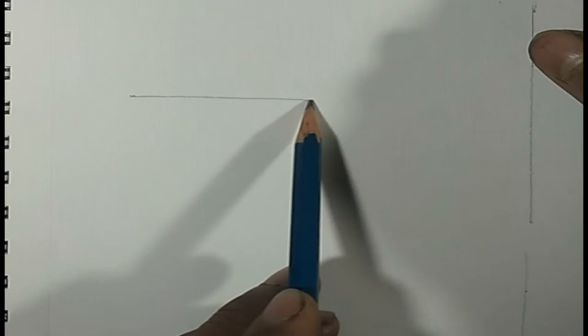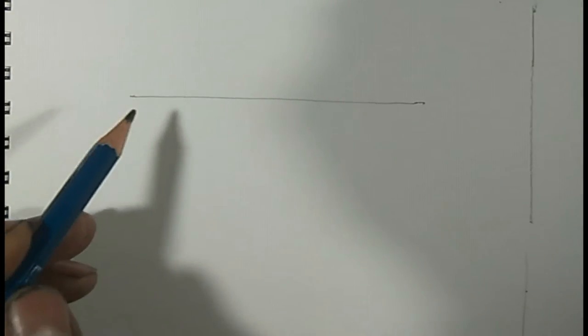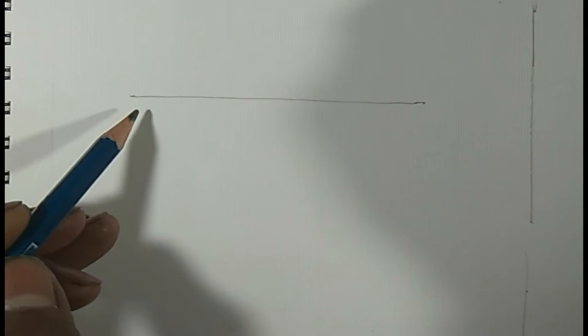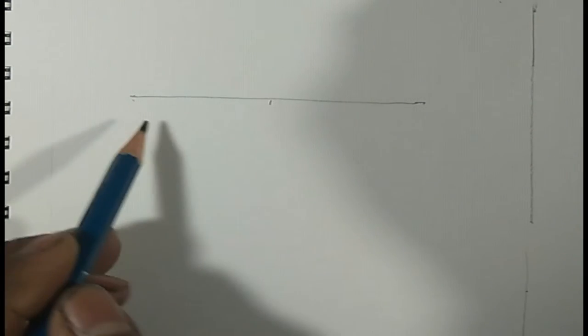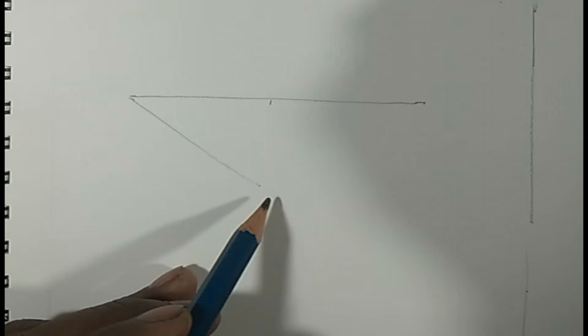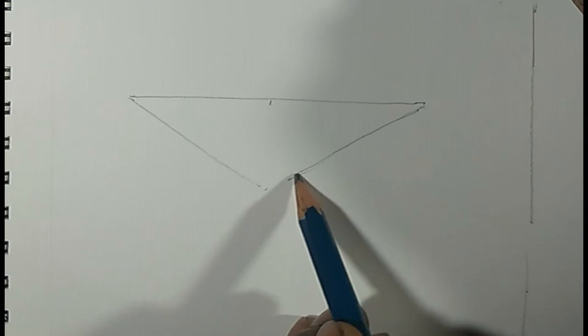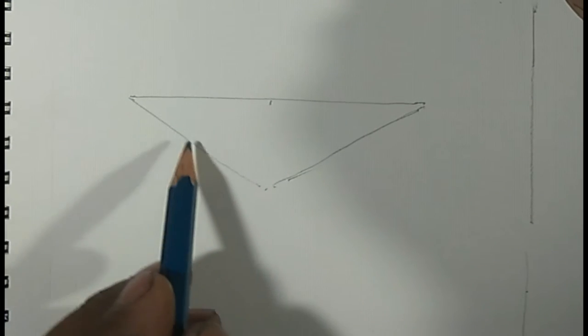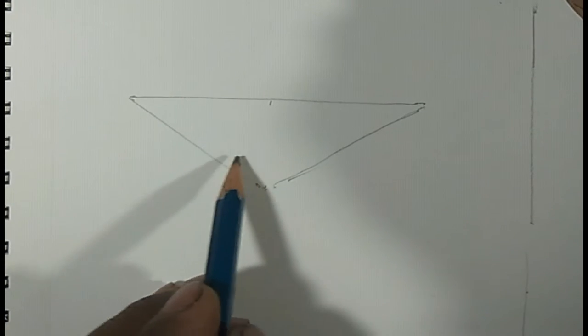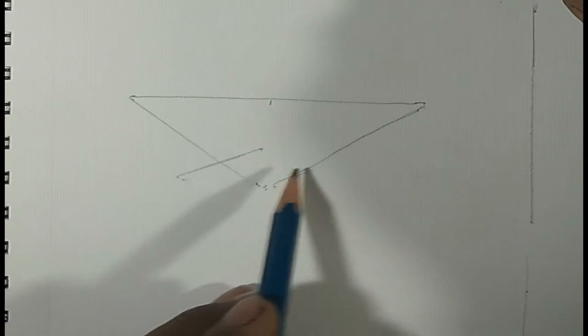First we draw a line next, make it triangle, then from the center we make another triangle.